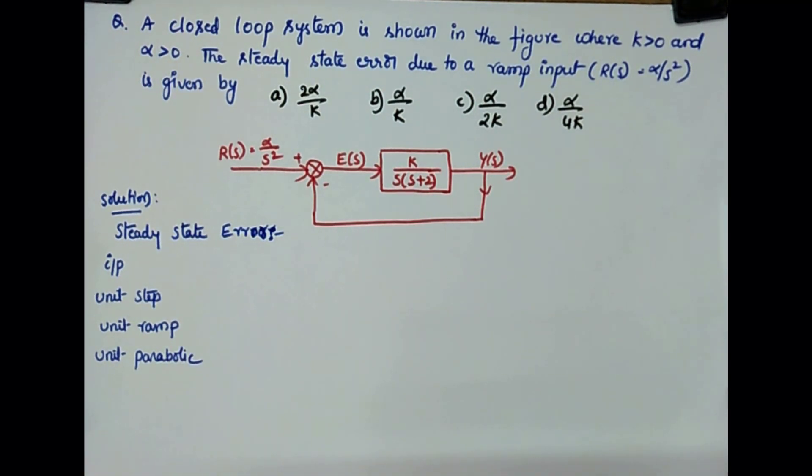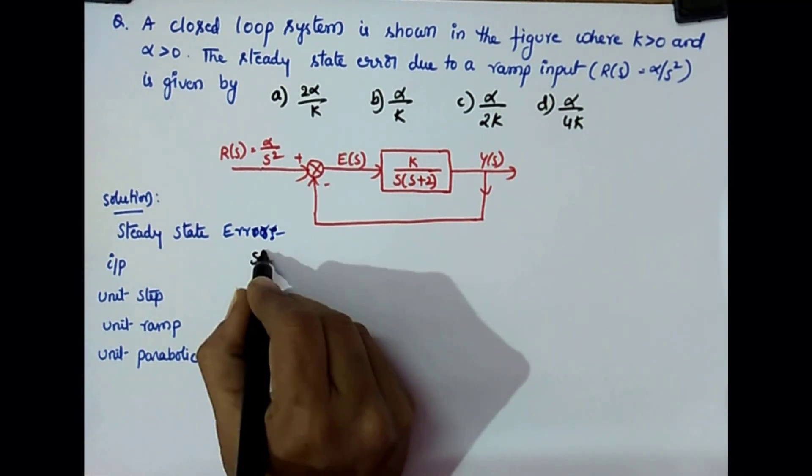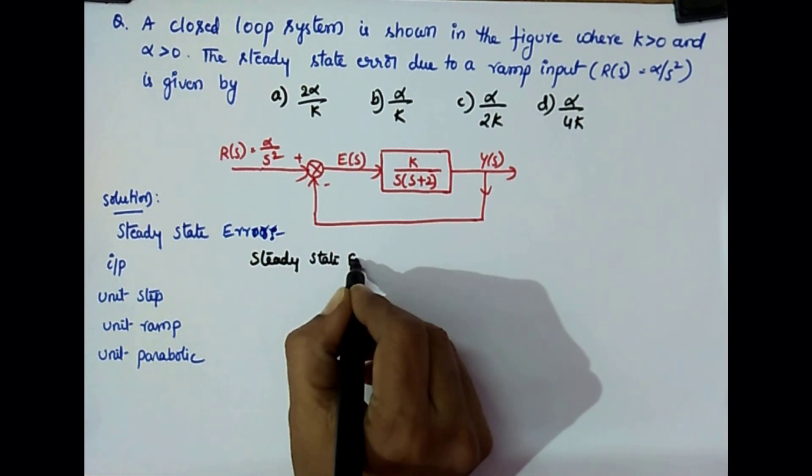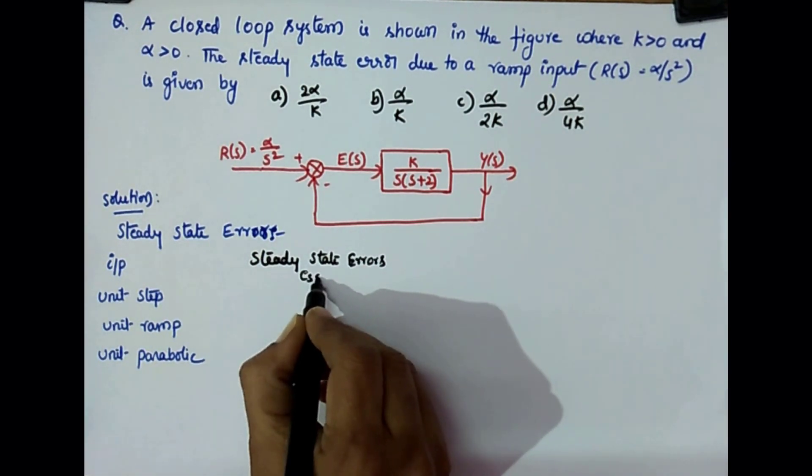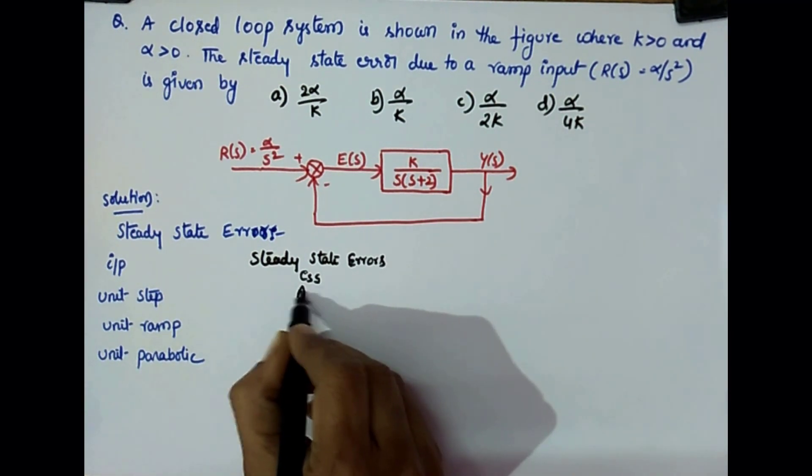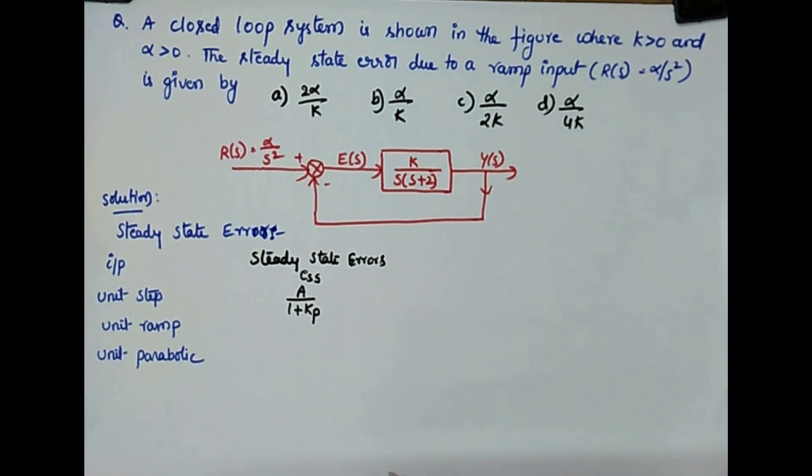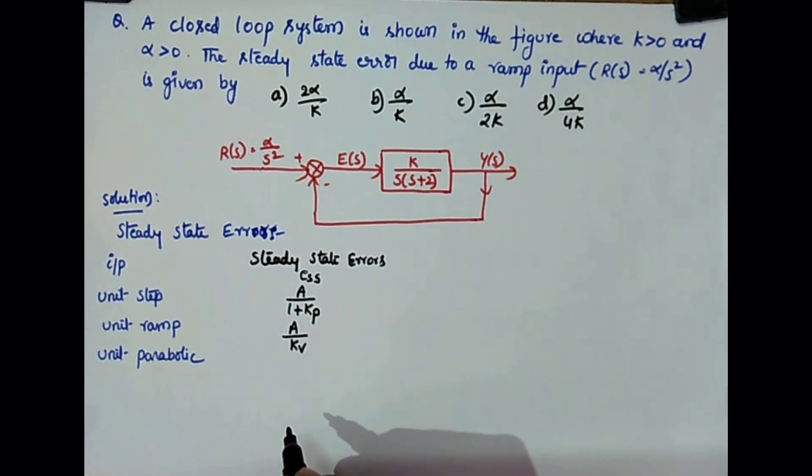We generally check the system by giving these three inputs. For these three inputs, the steady-state errors are: ESS is represented by ESS. First one is A by 1 plus Kp. And for ramp it is A by Kv. And for unit parabolic it is A by Ka.